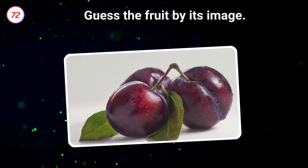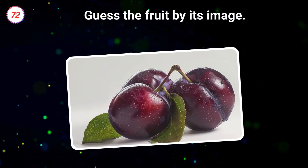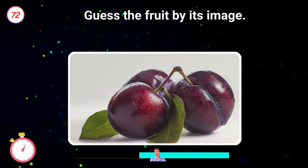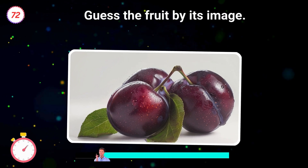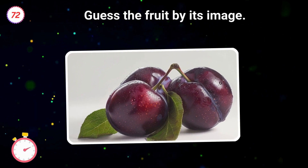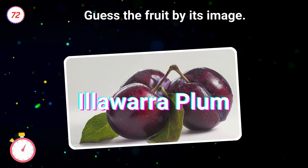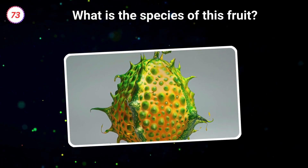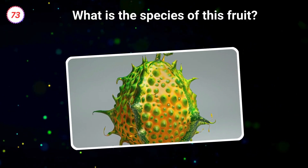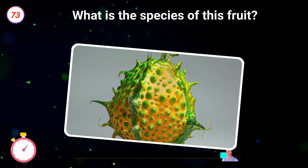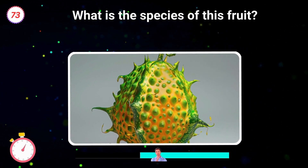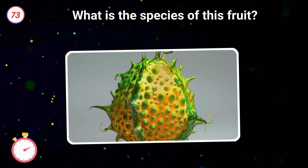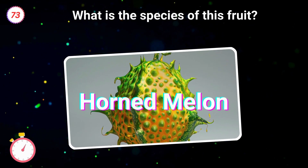72. Guess the fruit by its image. Illawarra plum. 73. What is the species of this fruit? Horned melon.